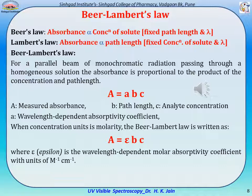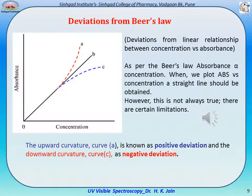When concentration units are in molarity, Beer's law is written as A = ε·b·c, where ε is the wavelength-dependent molar absorptivity coefficient. According to Beer's law, absorbance should be directly proportional to concentration, and a plot of absorbance versus concentration should yield a straight line. However, this is not always true and there are certain limitations.